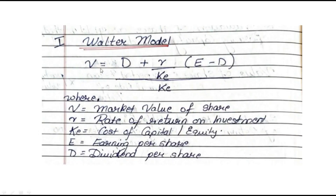Under Walter's model the main formula is: V = D + (r/Ke)(E − D) / Ke, where V stands for the market value of the share, r is the rate of return on investment, Ke is the cost of capital, E is the earning per share, and D is the dividend per share. Note down this formula because in each and every sum this is the formula we'll have to apply.